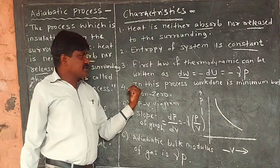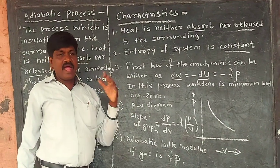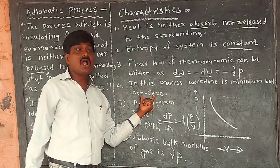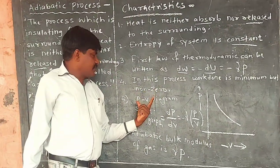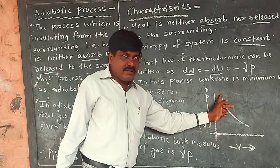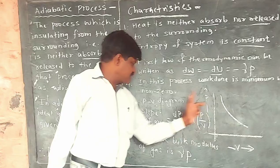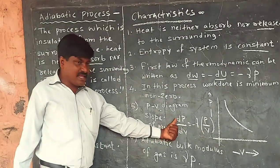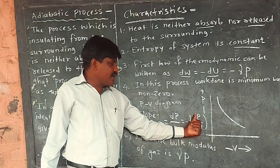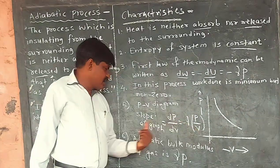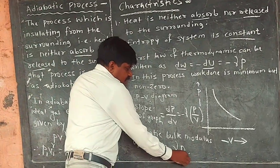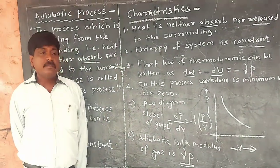In this process, work done is not zero. Considering pressure and volume, the adiabatic bulk modulus is equal to gamma into P.